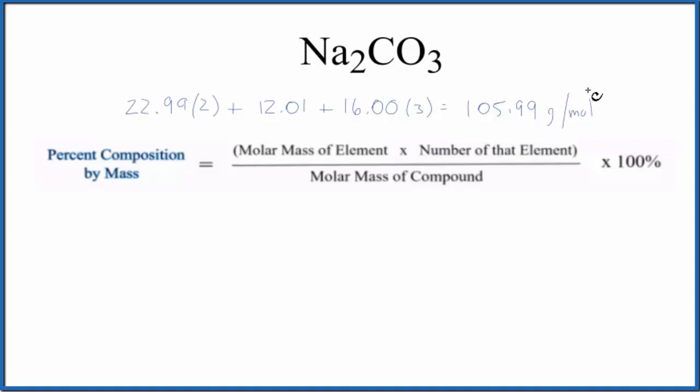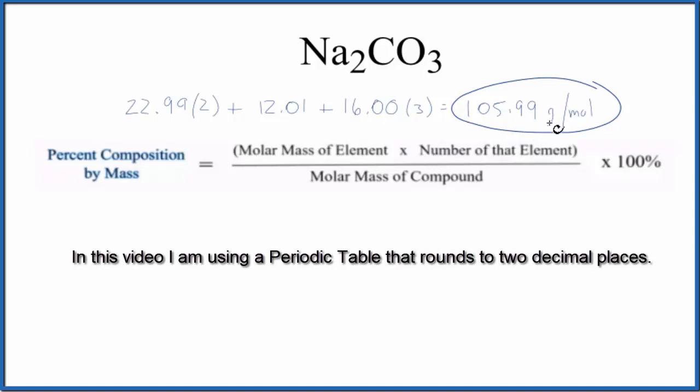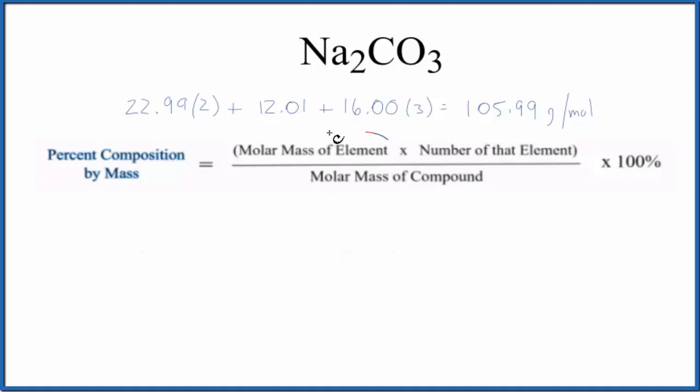I've done that for you here and you can see the molar mass for sodium carbonate 105.99 and the units are grams per mole. So we have the molar mass for the compound. Let's find the percent composition for each element in Na2CO3.